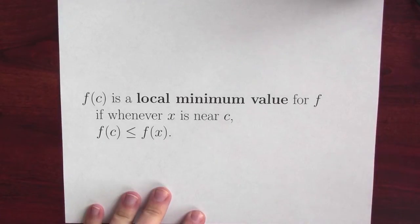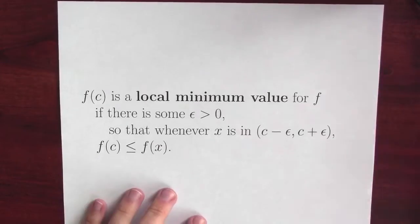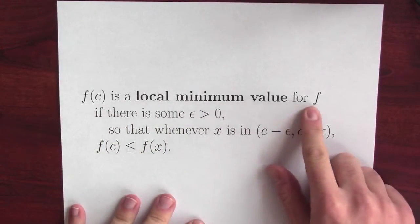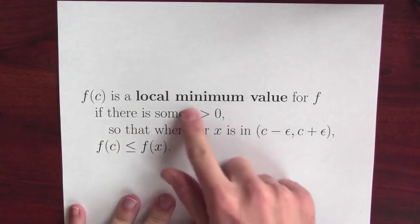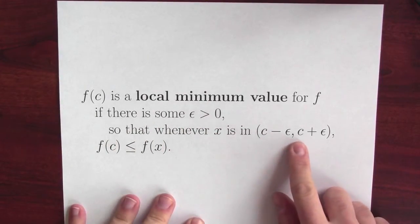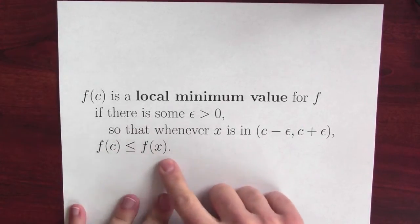Or even a little bit more precisely again, just like for local maximums, I can replace near with epsilon. f of c is a local minimum value for the function if there's some epsilon measuring the nearness so that whenever x is between c minus epsilon and c plus epsilon, f of c is less than or equal to f of x.